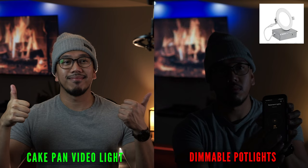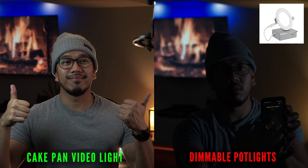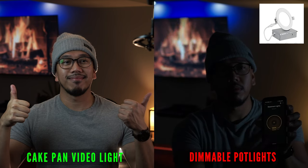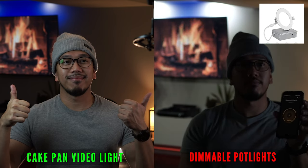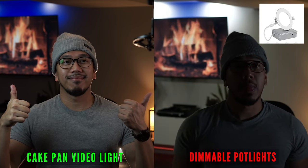First up are some dimmable pot lights. The brightness on these specific pot lights can easily be adjusted through your phone. However, they still proved to be too dark for this setting.